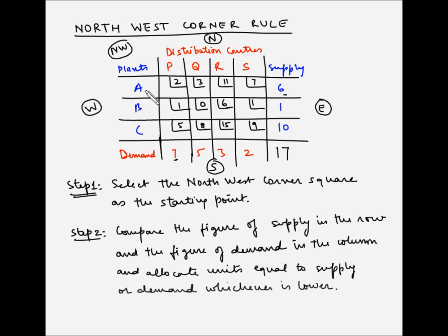We have selected the northwest square which is AP, that is plant A transporting material to distribution center P. The second step says compare the figure of supply in the row, which is 6, and the figure of demand in the column. For distribution center P, the demand is 7, and allocate units equal to supply or demand, whichever is lower.